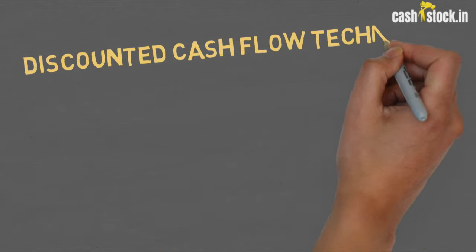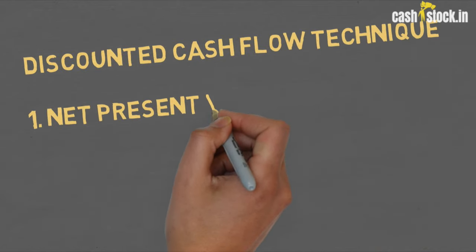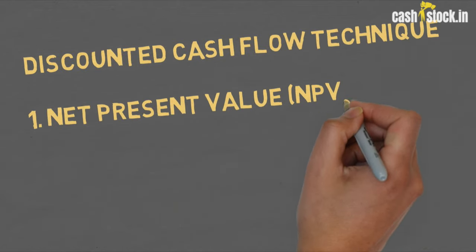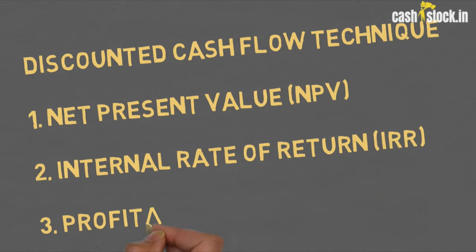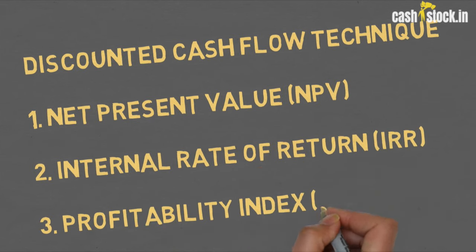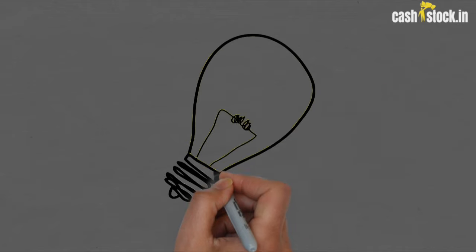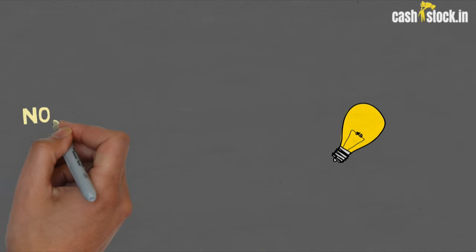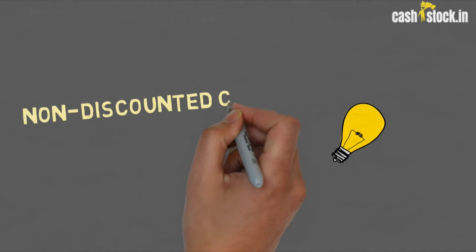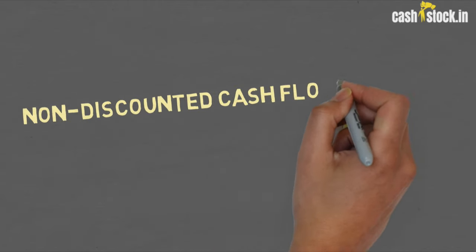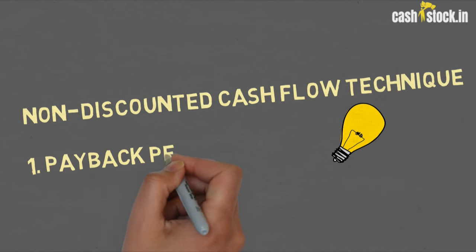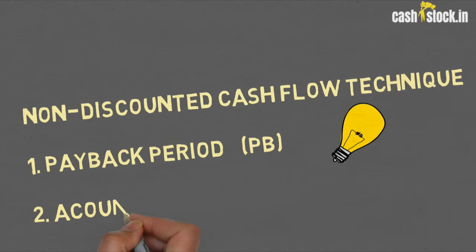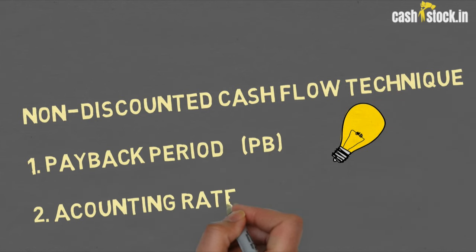In discounted cash flow criteria, we have net present value, internal rate of return, and profitability index. Whereas in non-discounted cash flow techniques, we normally have two: payback period and accounting rate of return.